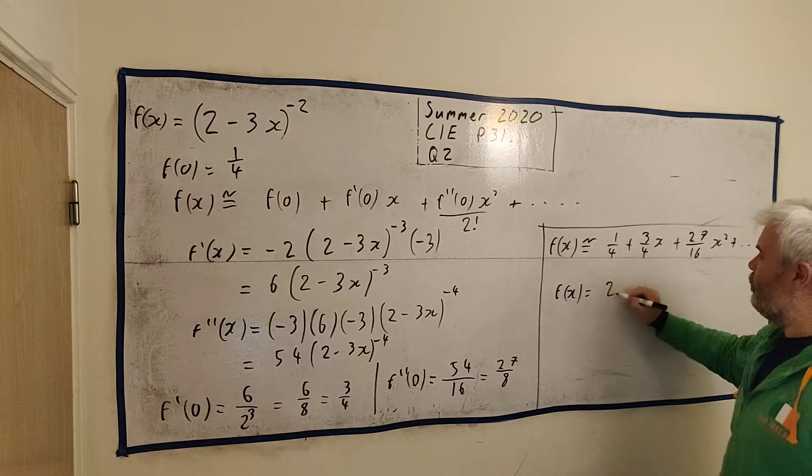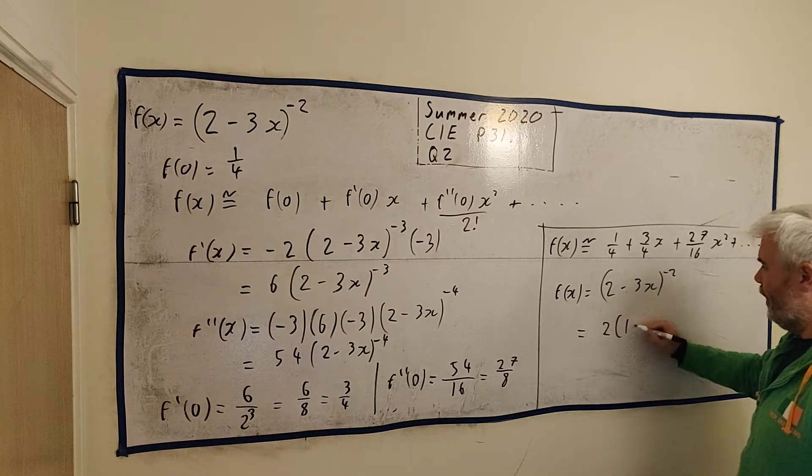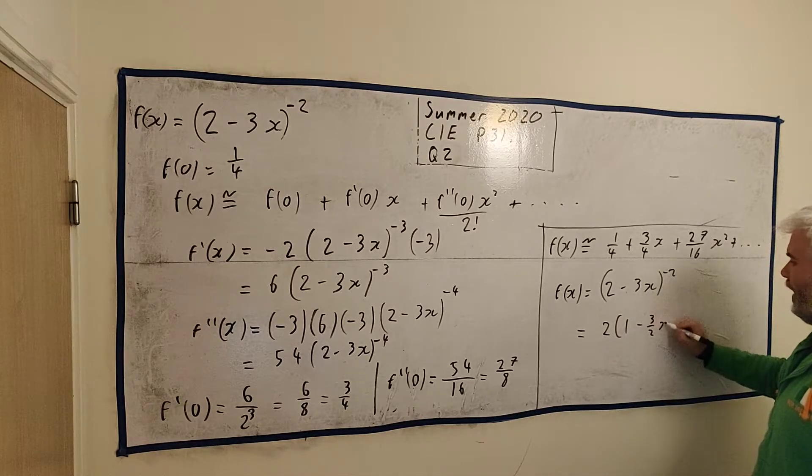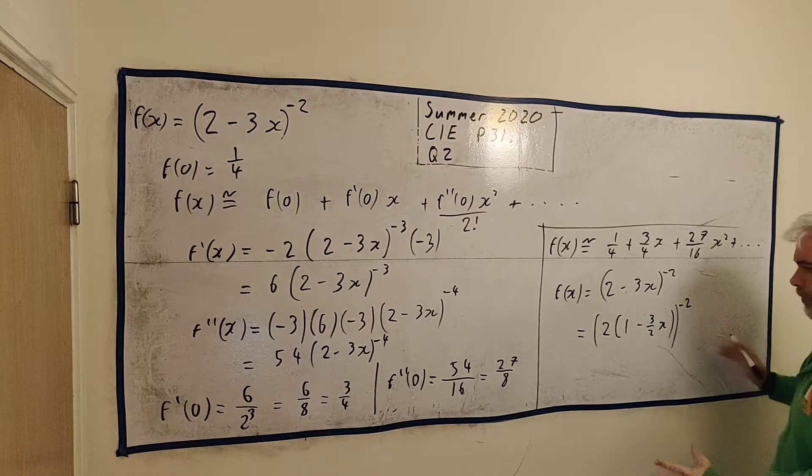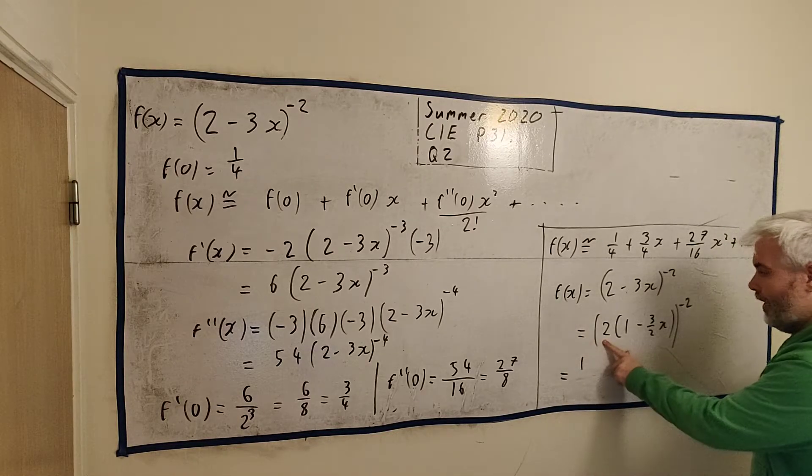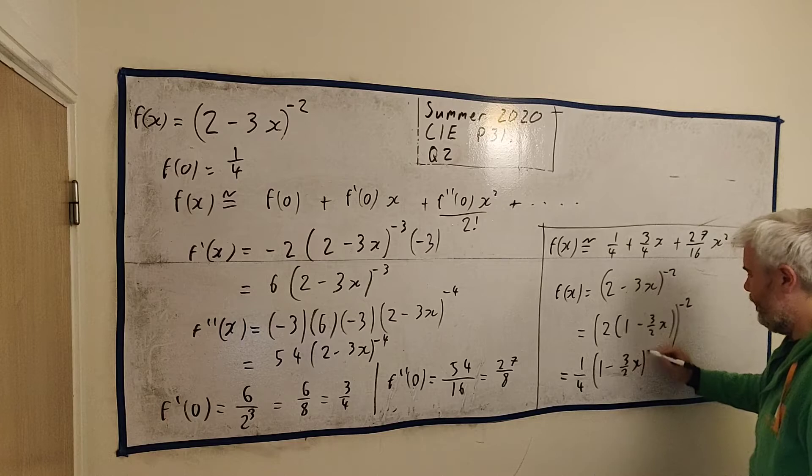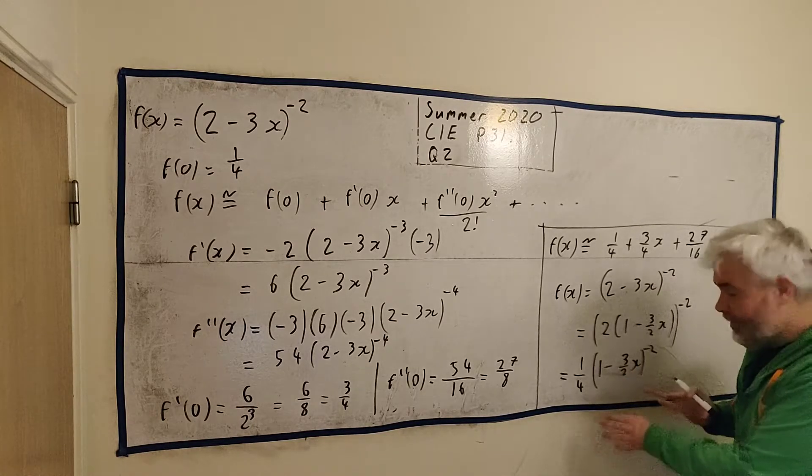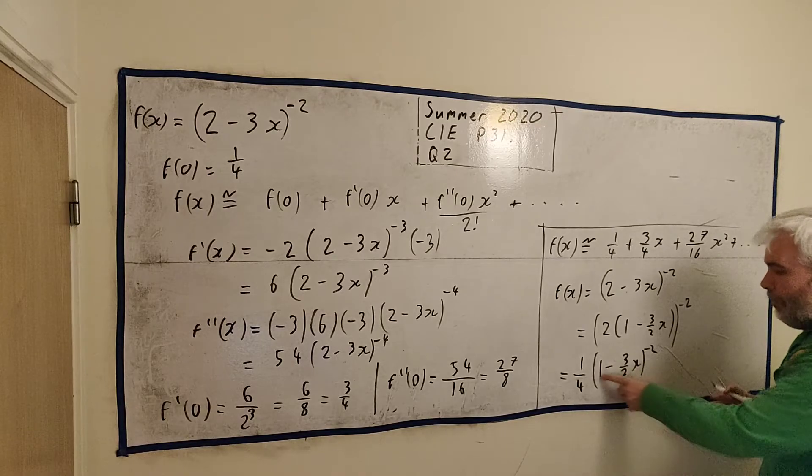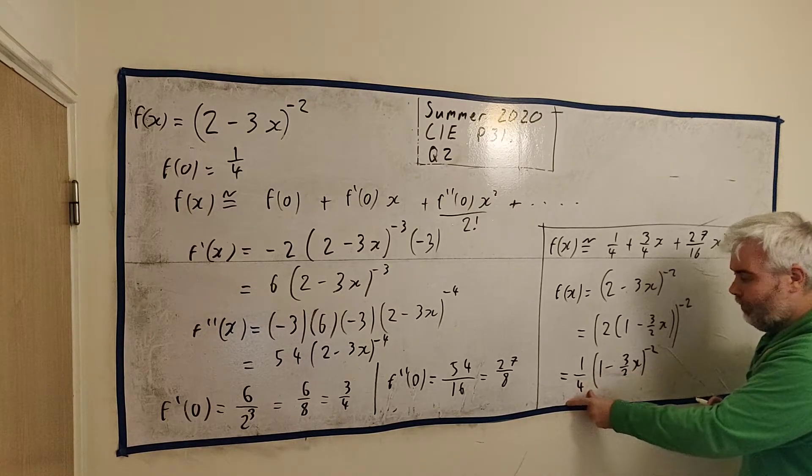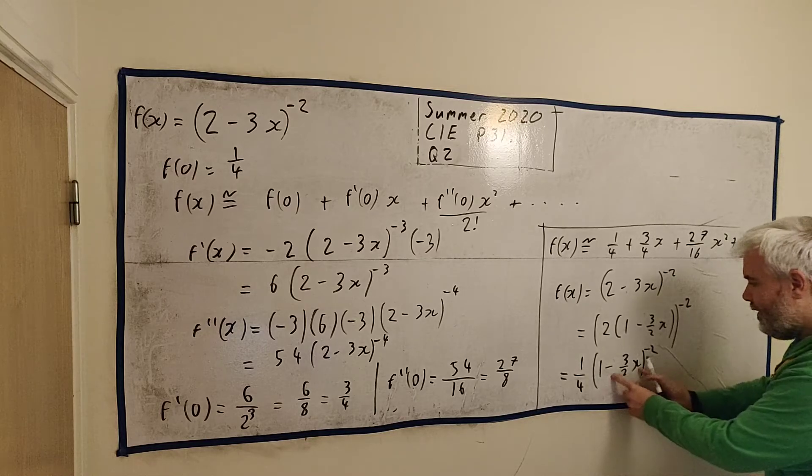Instead of doing it with this part, and this is how a lot of teachers would teach it, and certainly for this second part, it's much easier. Instead of doing this term here, f(x) equals 2 minus 3x to the power of minus 2, if we break this up and we put 2 times 1 minus 3 over 2x, so we're just taking 2 out of that and taking 2 out of this, and all of this is to the power of minus 2 still, we break this up. 2 to the power of minus 2 is a quarter, and we'd have 1 minus 3 over 2x to the minus 2.